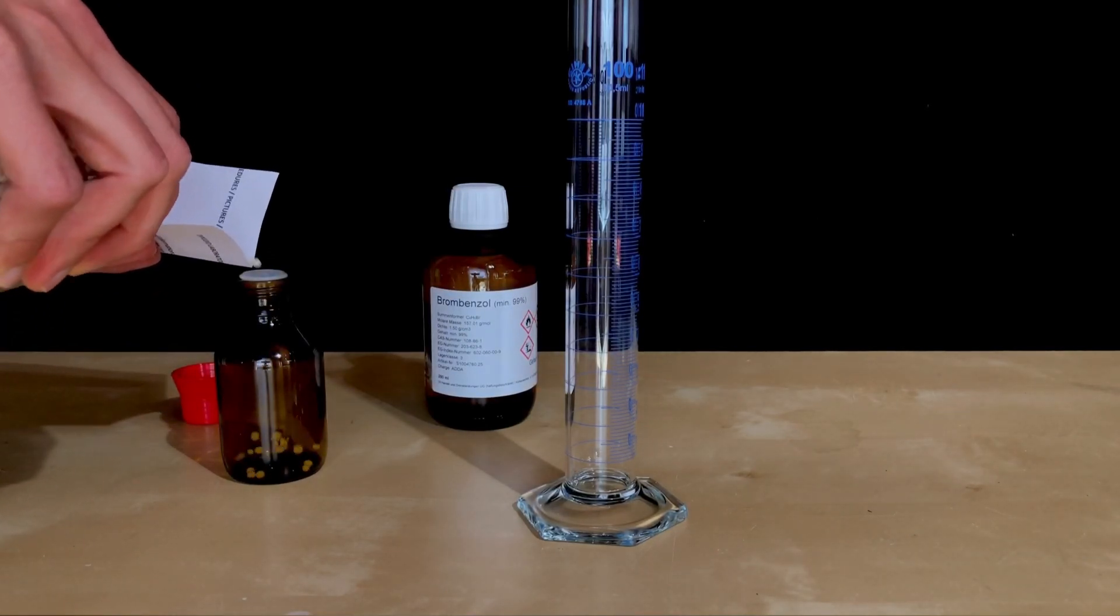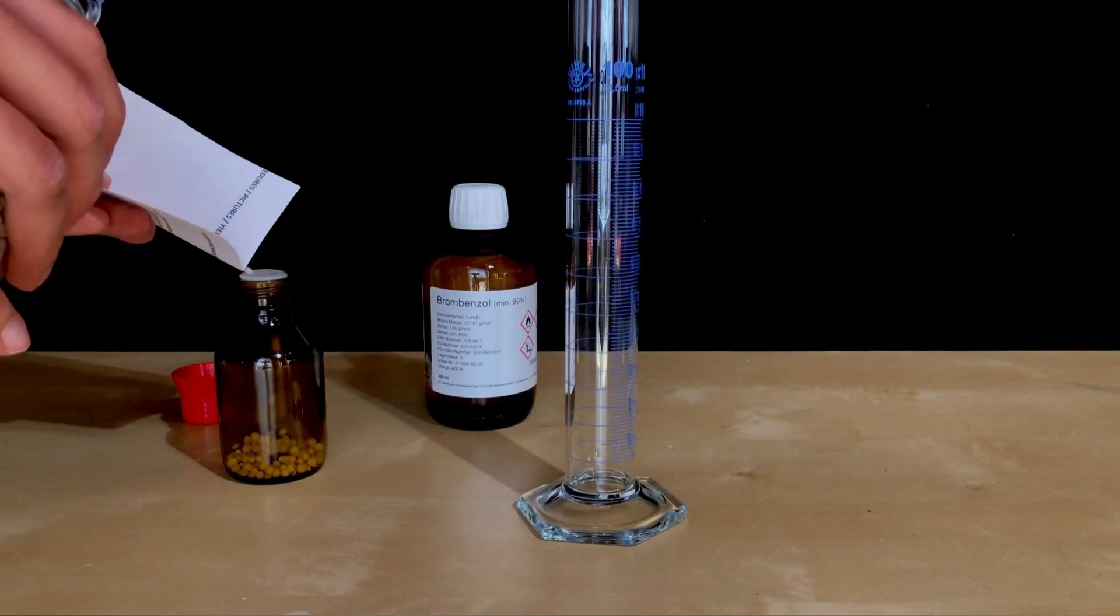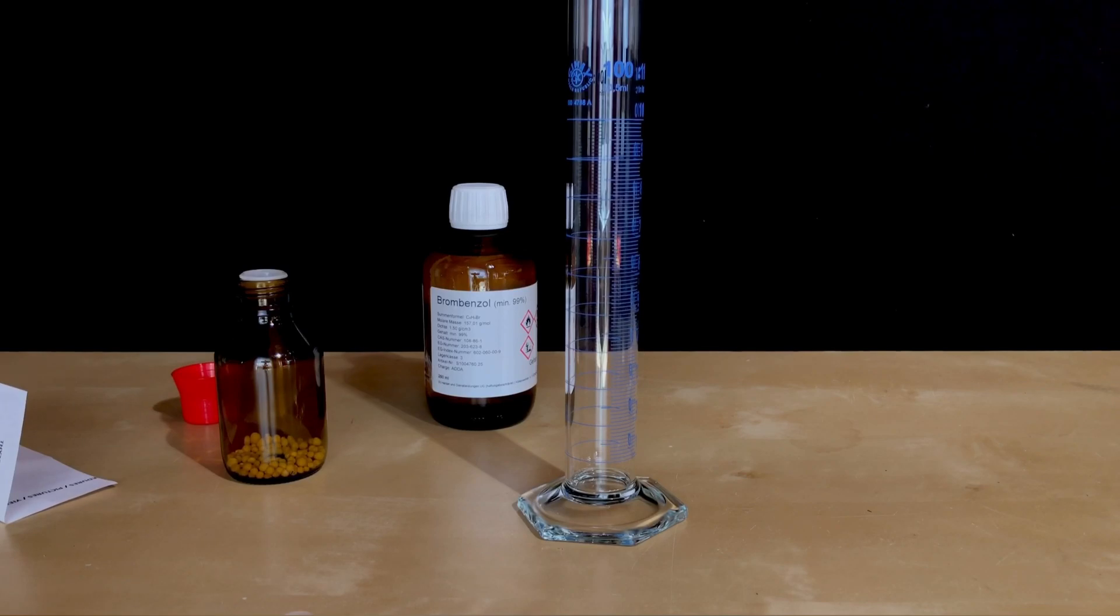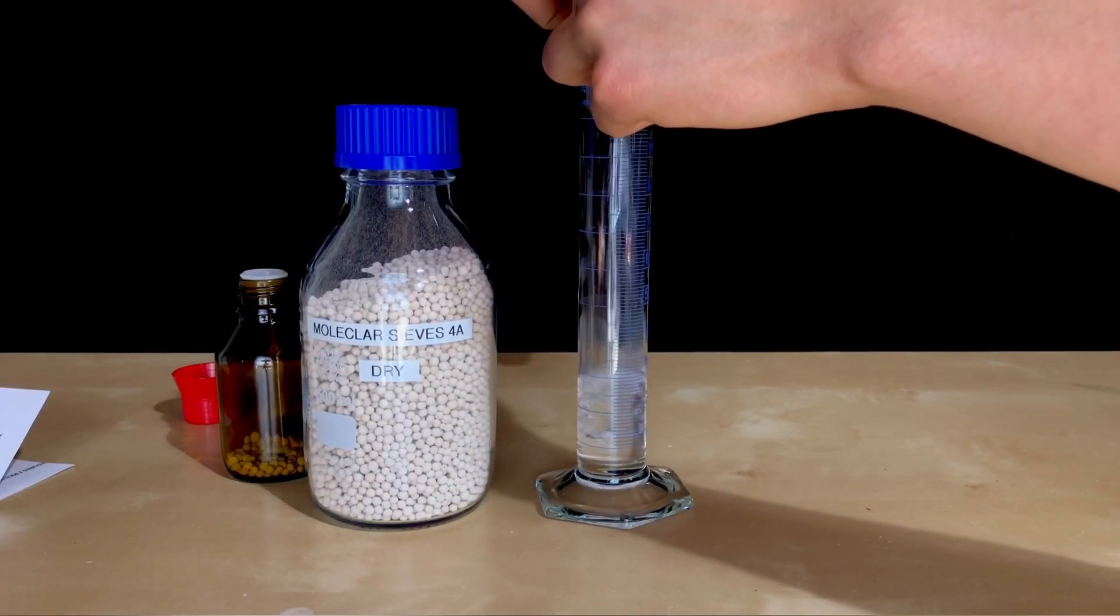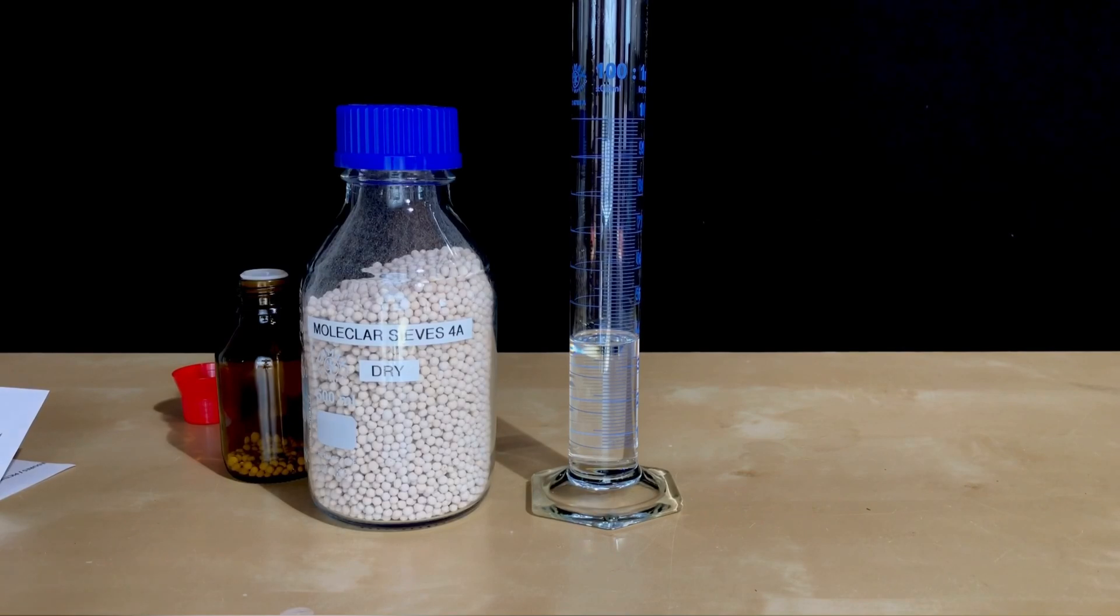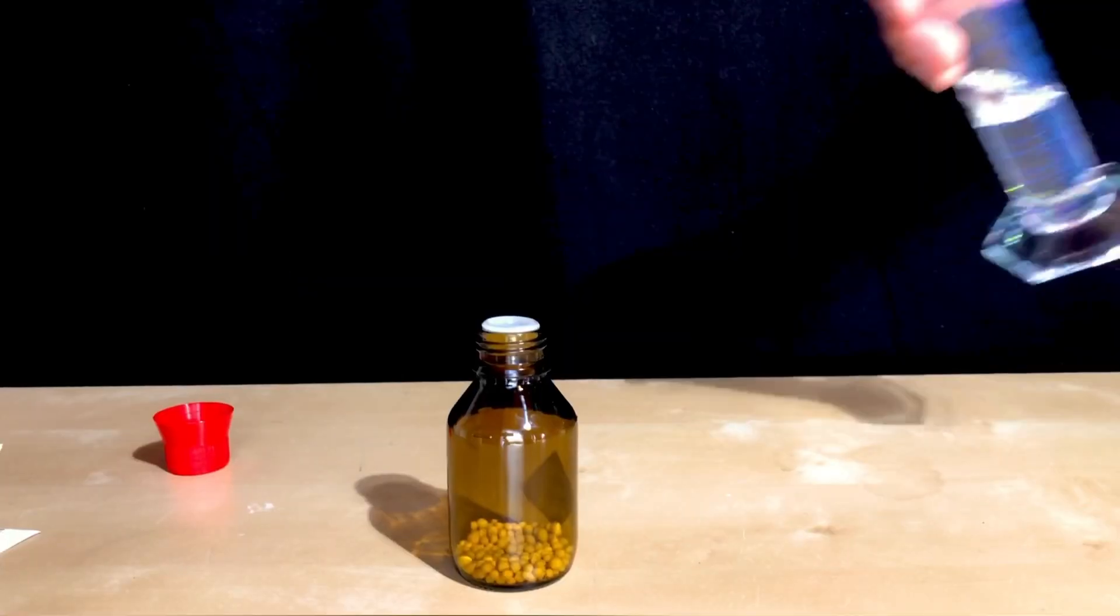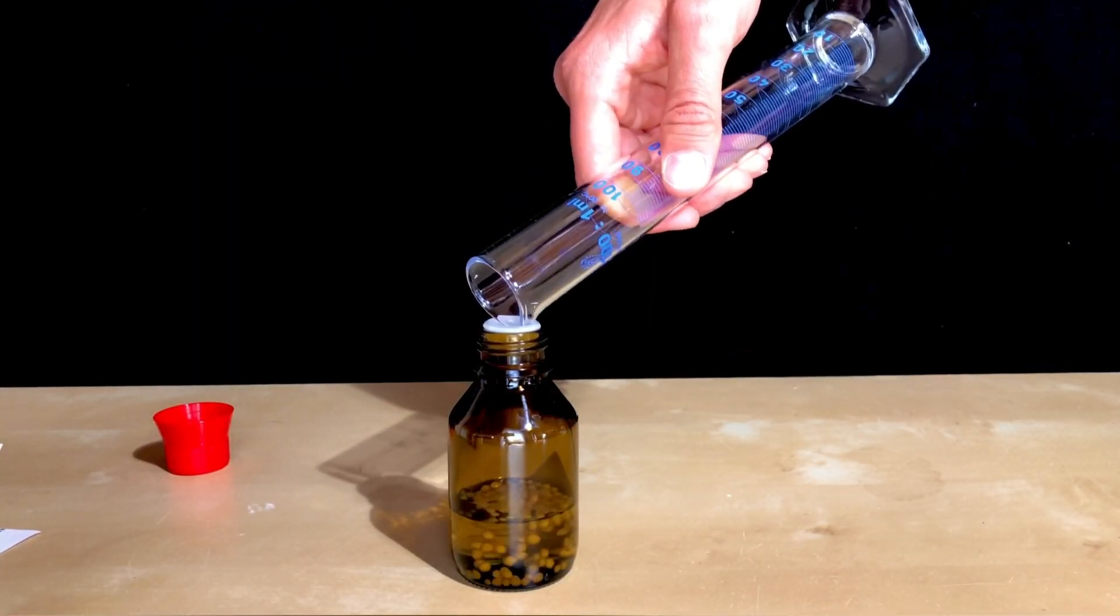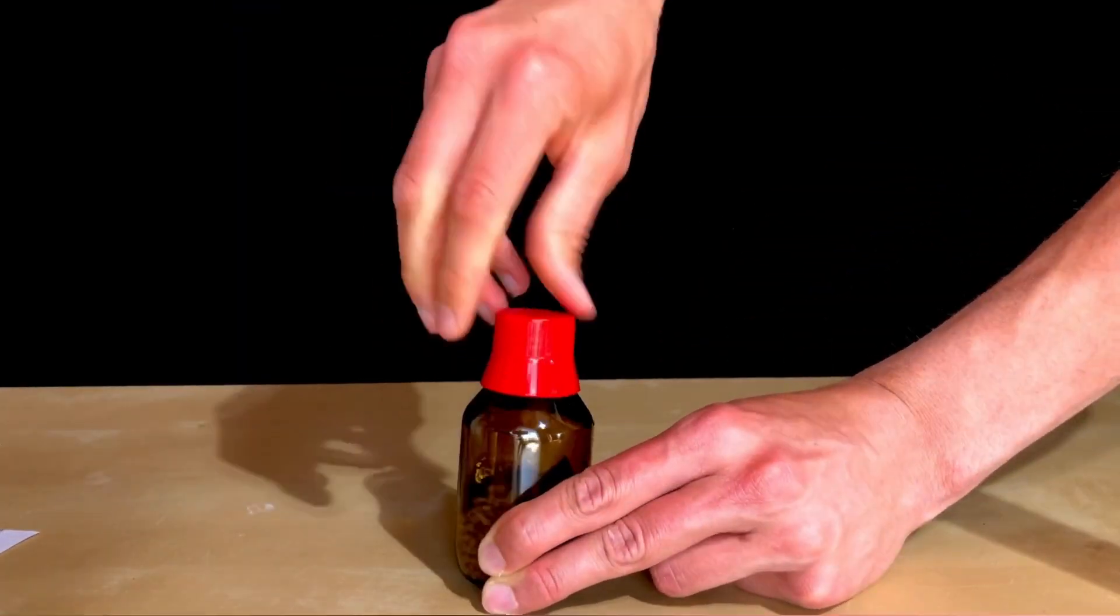To dry the bromobenzene, sodium cannot be used as it would simply react with the bromobenzene. Therefore, we used a different drying agent, molecular sieves. A little more bromobenzene than actually needed was measured out and added to the bottle. Both the diethyl ether and the bromobenzene were left to dry overnight.